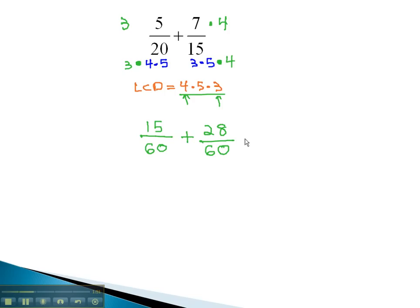Now that we have common denominators, we're allowed to add the numerators. 15 plus 28 is 43 over 60.